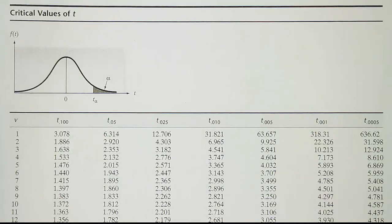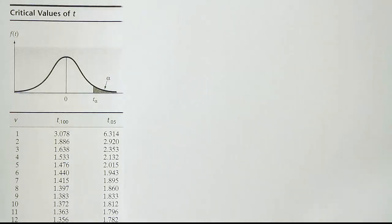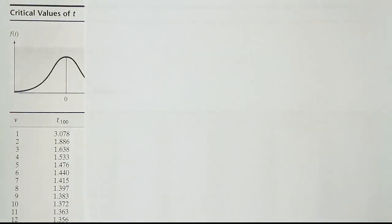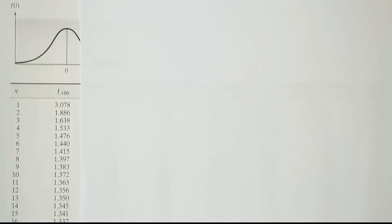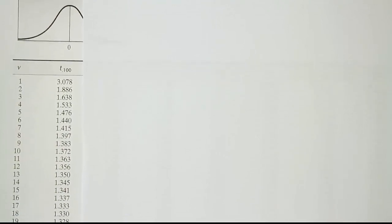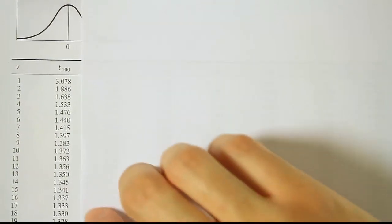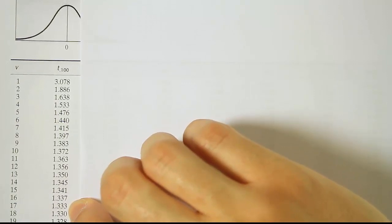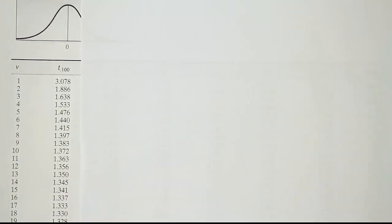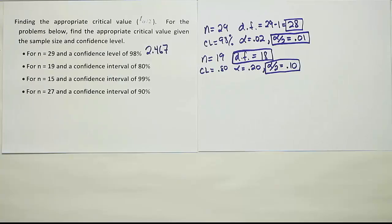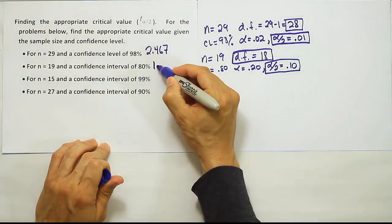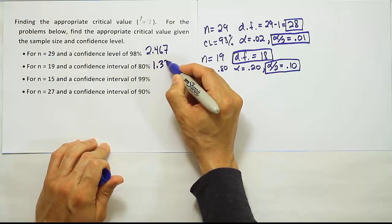We're looking up 0.10 and 18 degrees of freedom. The 0.10 column is the very first column, and scrolling down to 18 degrees of freedom gives us the answer of 1.330.